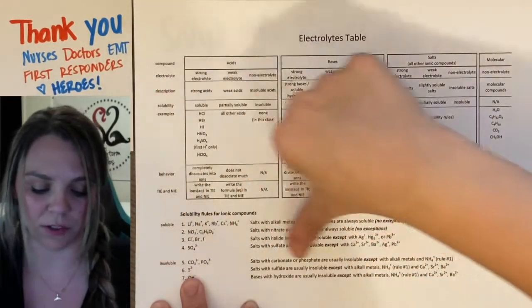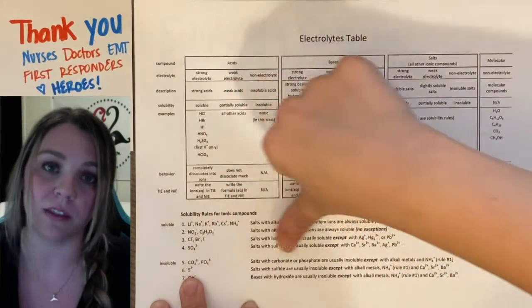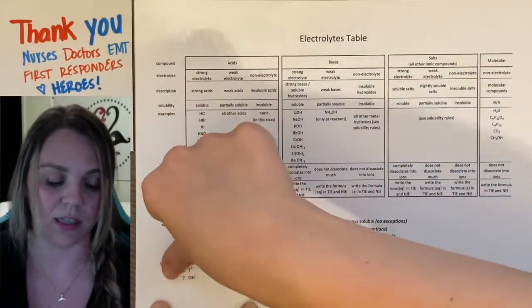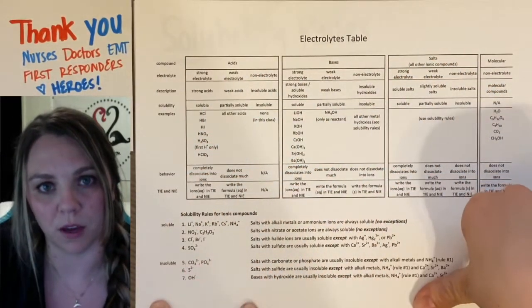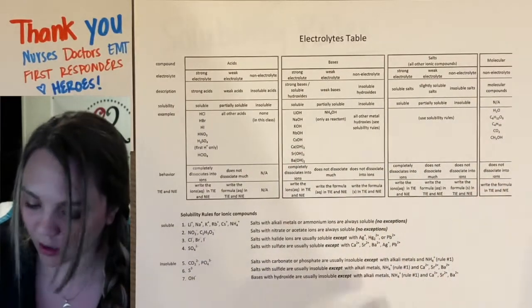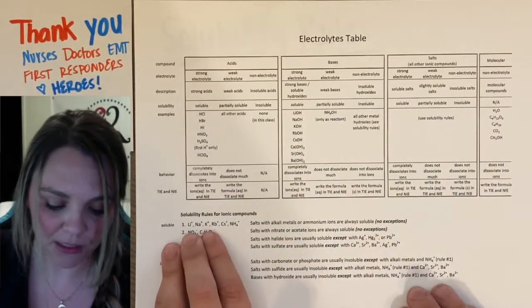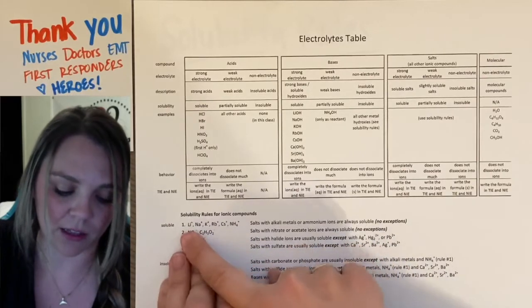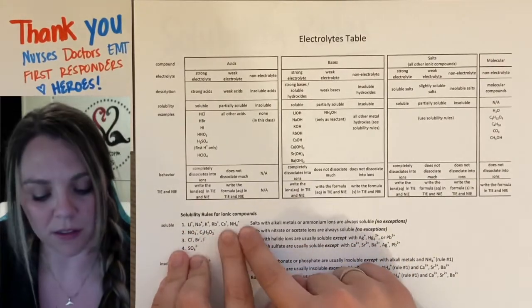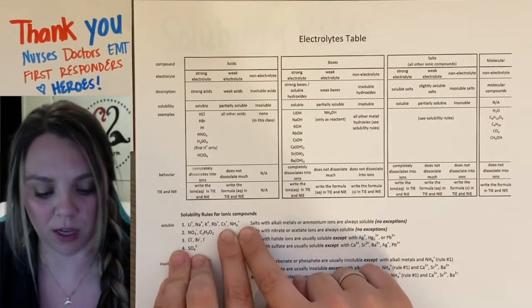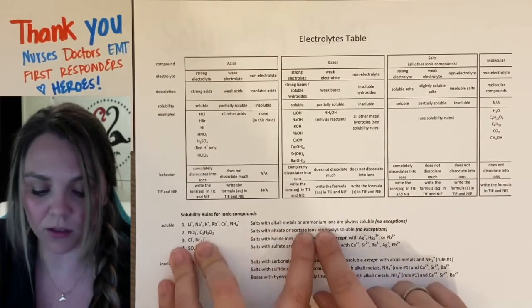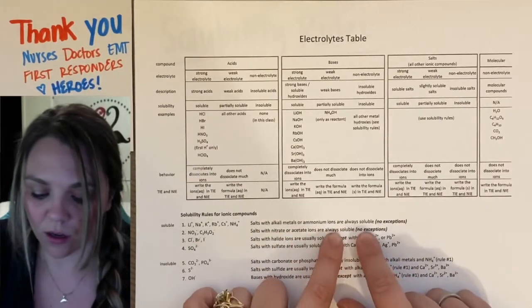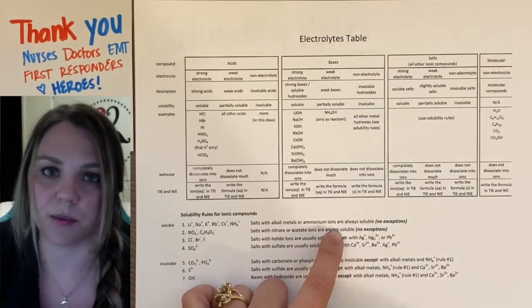First section is telling you all these things will be soluble. Second section is saying these things will be insoluble. Rule number one. It lists all of the alkali metals and ammonia. It says salts with alkali metals or ammonium are always soluble. No exceptions. So, literally, there's no exceptions.